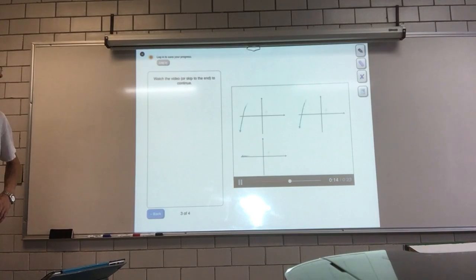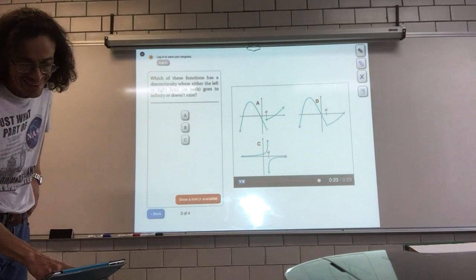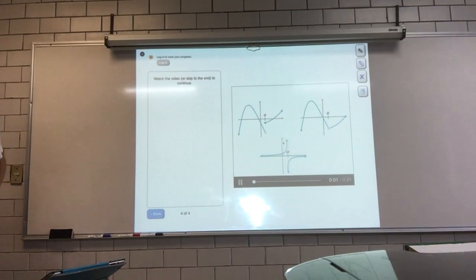Let's look at one more kind of discontinuity. Which of these functions has a discontinuity where either the right limit or left limit, or both, go to infinity or don't exist? Right. The answer was c, since the function goes off to positive and negative infinity at x equals a. This kind of discontinuity, where the left or right limits go to infinity or don't exist, is called an essential discontinuity.